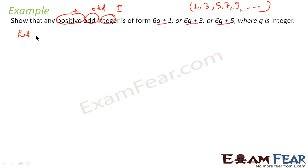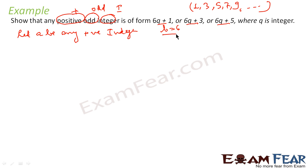To prove this, let a be any positive integer and let b = 6. Please note why we have assumed b = 6: because the question says 6q+1, 6q+3, 6q+5. If the question said 3q+1 or 3q+2, we would have taken b = 3. Depending on the question, we take the value of b — this is the key trick. Since the question uses 6q throughout, we take b = 6.